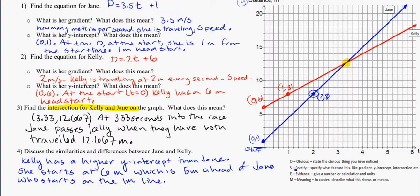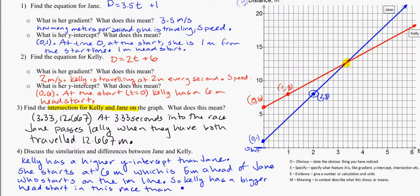So here I've been obvious, one's higher than the other. Specifically what I'm talking about is my y-intercept. And my evidence is that one's at 6 and one's at 1, and there's a difference of 5 between them. And then in meaning, putting it into context here, so Kelly has a bigger head start in this race than Jane.